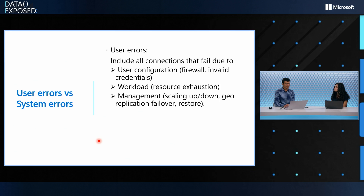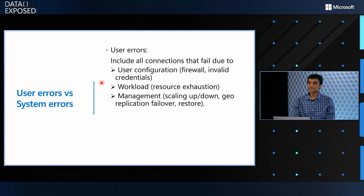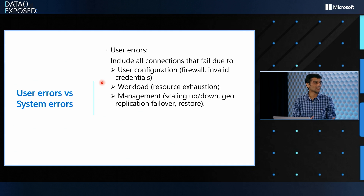Let's quickly go through what user errors and system errors are. User errors are all the errors that fail due to user configuration. For example, if someone has set up a bad firewall or hasn't opened up the firewall and they're trying to connect, they would get a connection failure — nothing bad happening on the service side, just a configuration issue. Or maybe someone is connecting with invalid credentials; those are also categorized as user errors.